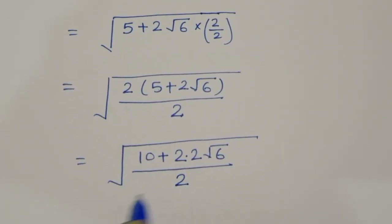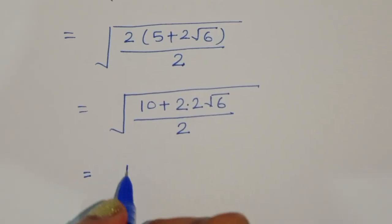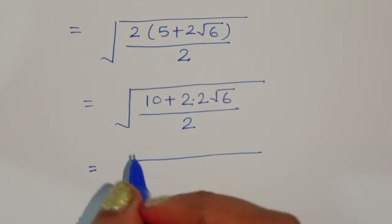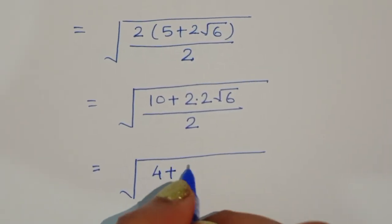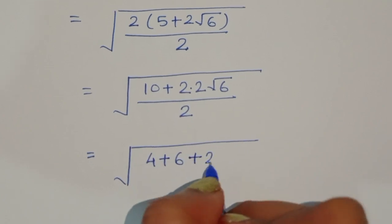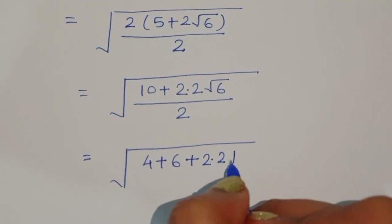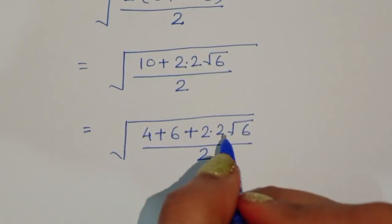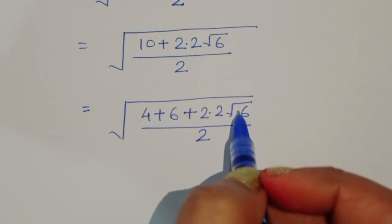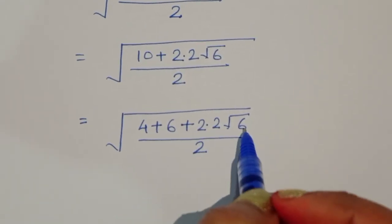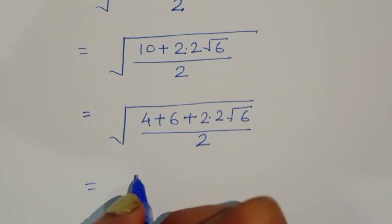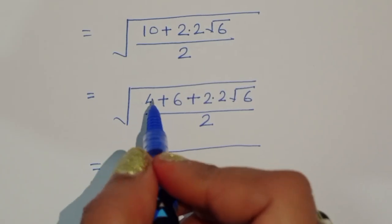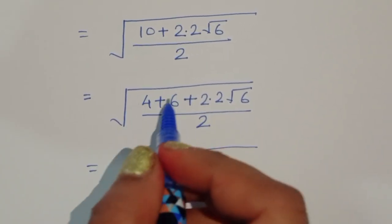Now this 10 we can write in the form of 4 plus 6, since 4 plus 6 is 10. So we write 4 plus 6 plus 2 times 2 times square root of 6, all divided by 2. We are doing this to convert the expression into the form a squared plus b squared plus 2ab, which is a perfect square form.